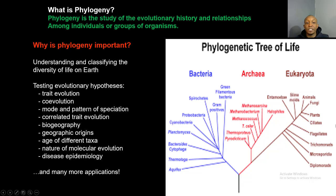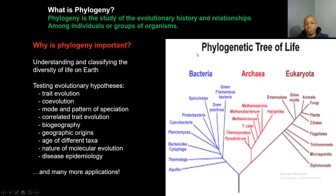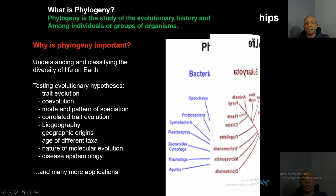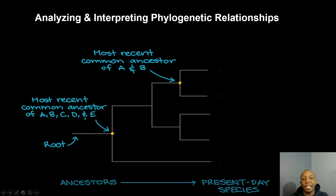Biologists largely use phylogenetic trees to test evolutionary hypotheses for things such as trait evolution, co-evolution, patterns of speciation, correlated trait evolution, biogeography, geographic origins, age of different taxa, nature of molecular evolution, disease epidemiology, and many more applications.